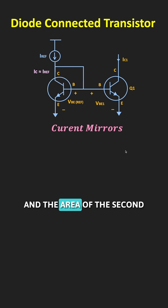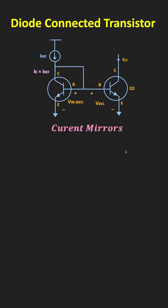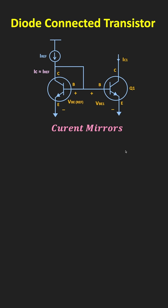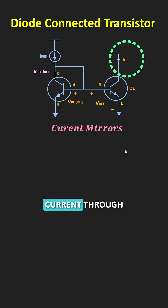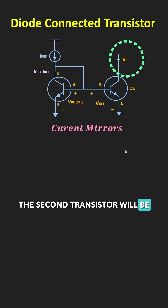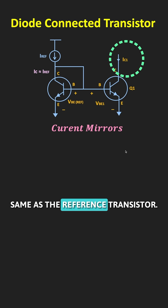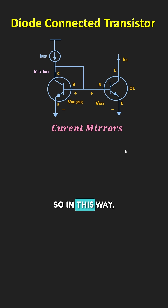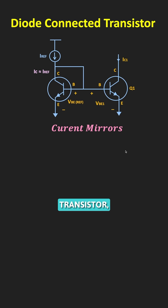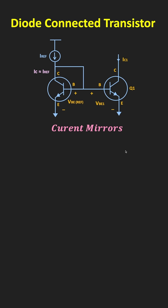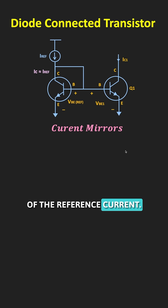That means the VBE of the second transistor is the same as the reference transistor. If the area of the second transistor is the same as the first transistor — or in other words, if they are perfectly matched — then the collector current through the second transistor will be the same as the reference transistor. In this way, using the diode-connected transistor, it is possible to design a current mirror and make a copy of the reference current.